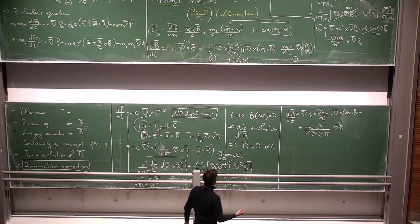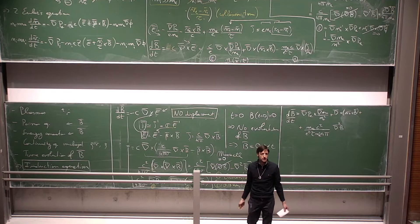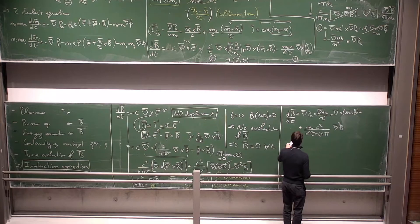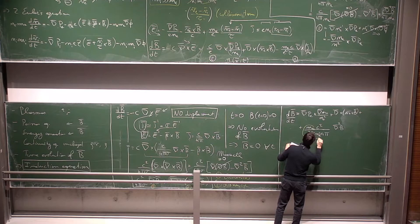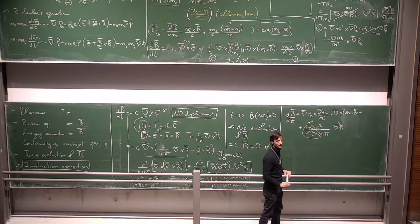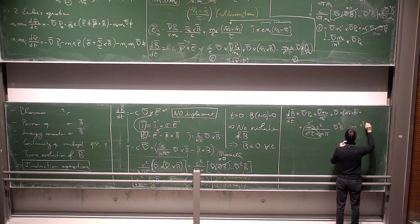The collision time τ can be absorbed into the conductivity: σ = e²τN_e/m_e. So the last term — the resistive diffusion term — can be written as (c²/4πσ)∇²B, recovering the same form as in the single-fluid case.